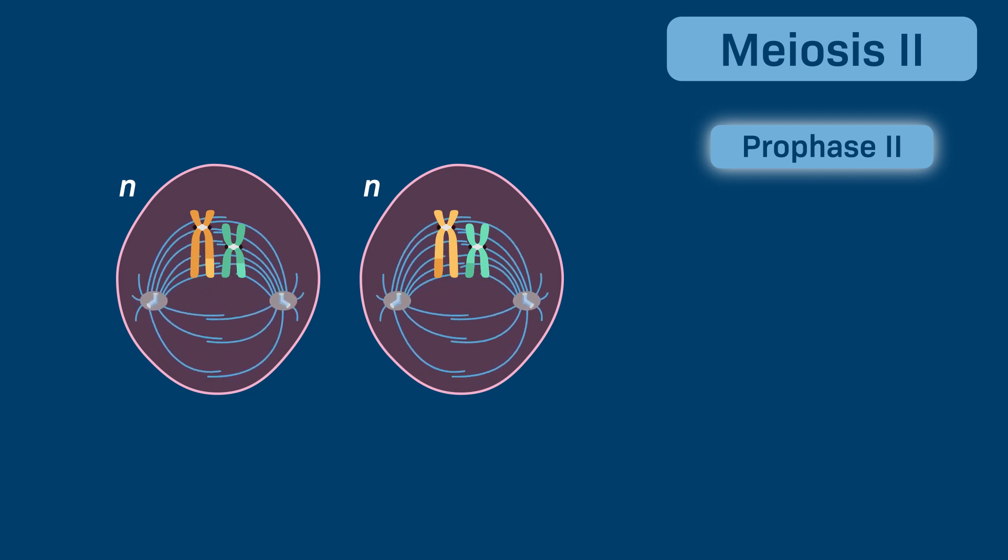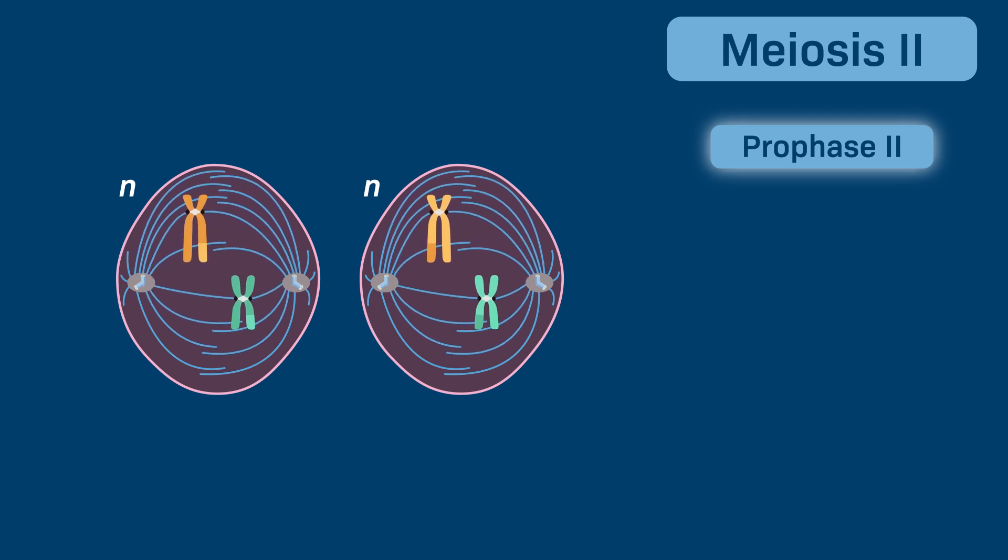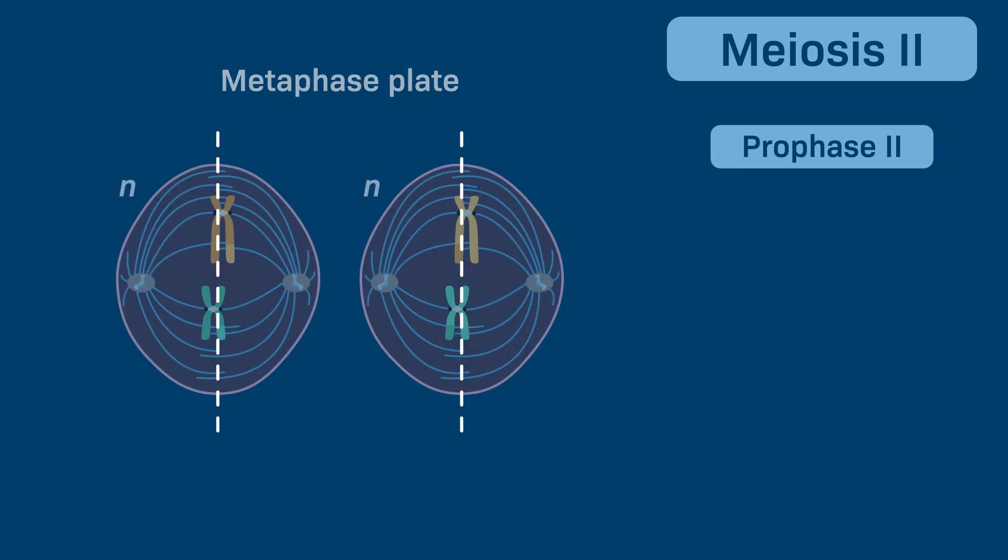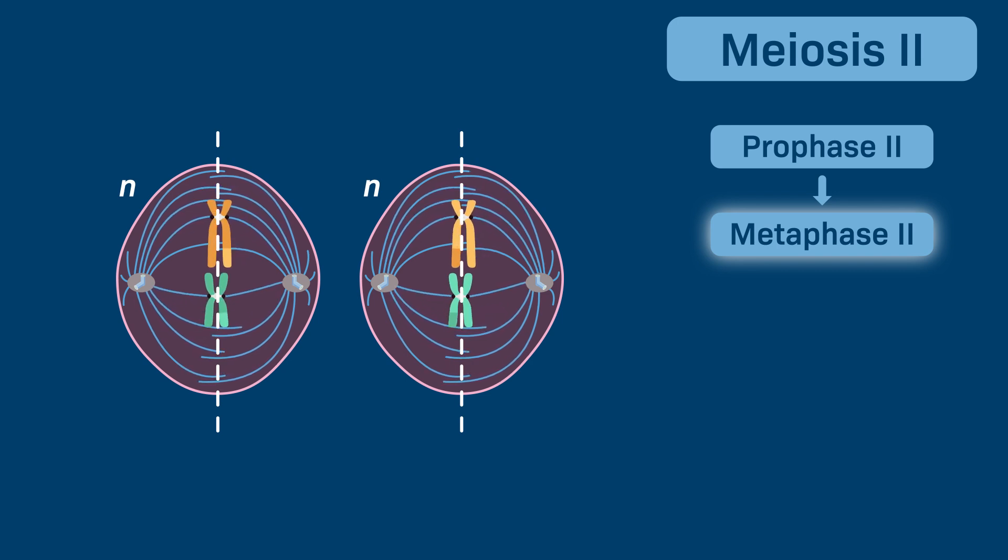Microtubules from opposite spindle poles attach to the kinetochore of each chromatid. The microtubules move the chromosomes back and forth toward the metaphase plate. Metaphase II occurs once each of the chromosomes is aligned on the metaphase plate.